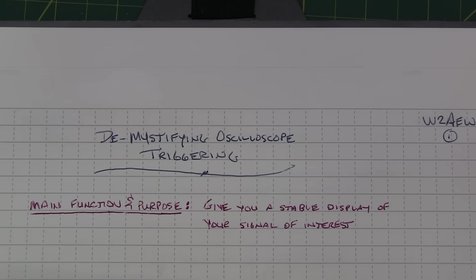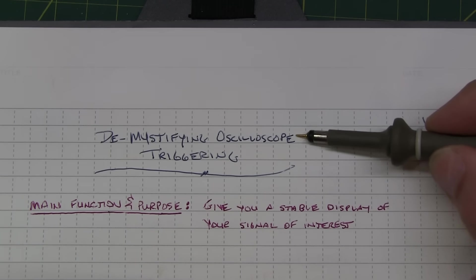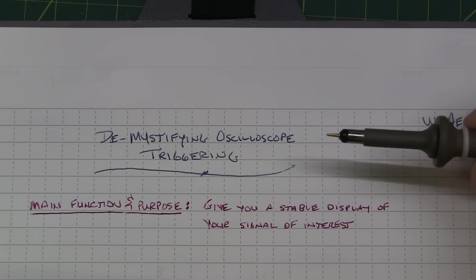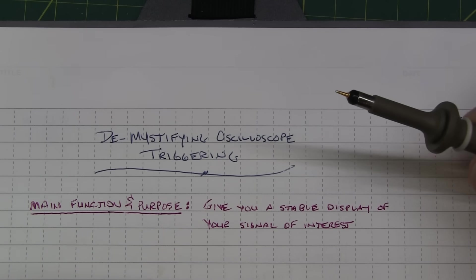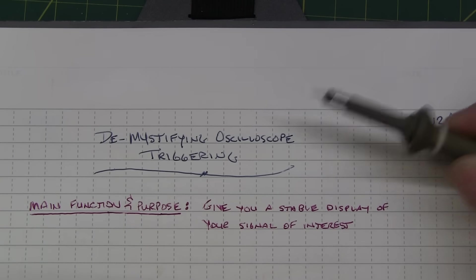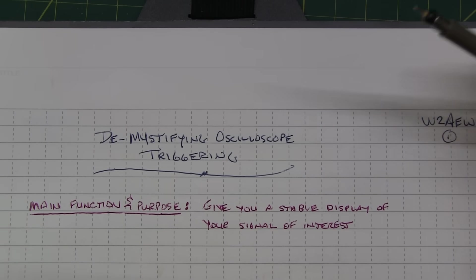In today's short video we're going to take a look at demystifying the function of triggering on an oscilloscope. I recently saw a survey that one of the most confusing topics that new users and even experienced users have on scopes is what is meant by triggering, how do I adjust it, how do I use it. So we'll try to clear some of that up here today.